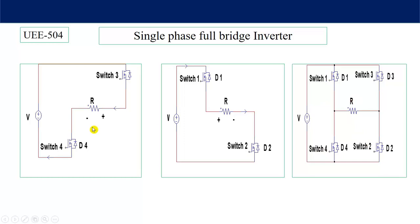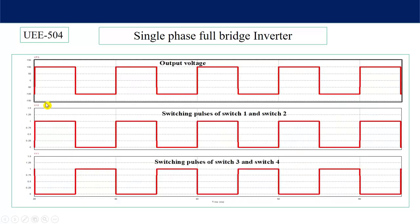Let's see the equivalent circuit. When switches 3 and 4 are on, the current will flow in one direction and the output voltage will be positive. When switches 1 and 2 are on, the current will flow in the opposing direction through the load resistance, so the polarity will be reversed — negative. So both positive and negative output voltage are applied across the load resistance, and we get a square wave output voltage.